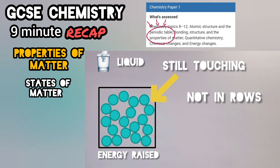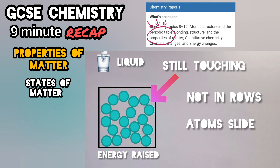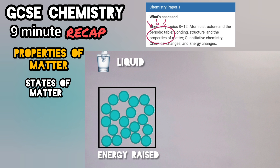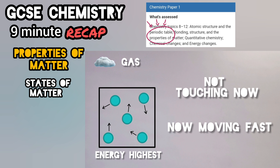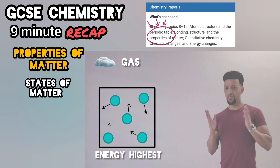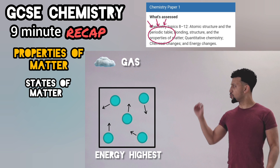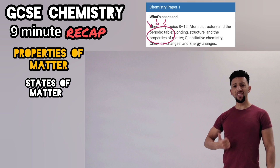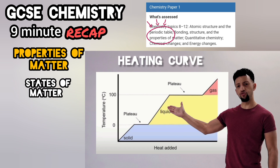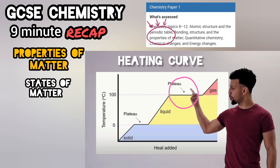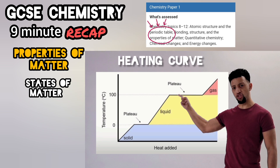As a liquid, as heat is absorbed their energy grows. They still touch although not in rows — atoms slide above and below. With more energy atoms move away from each other, no longer touching, moving so quickly it's like they're rushing. That's the last thing — what's taking place in this heating curve? Right here the temperature rises, but yet this place here is preserved.